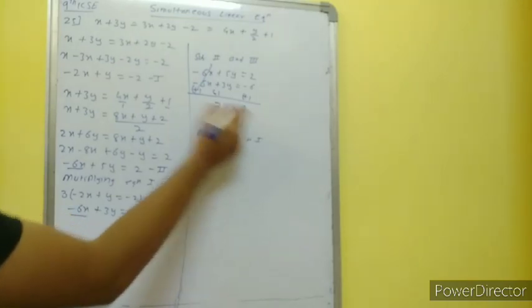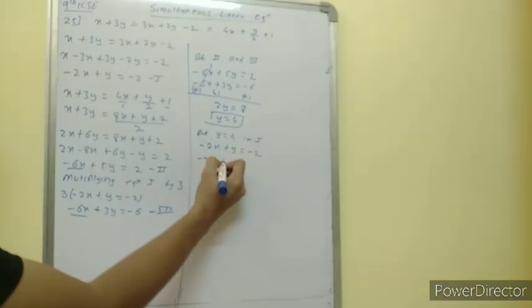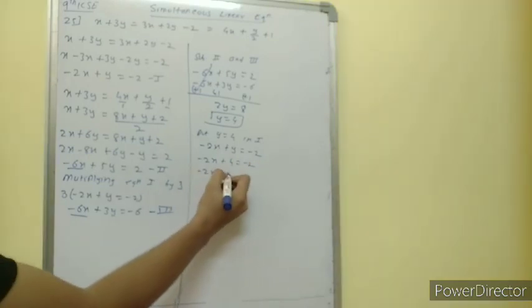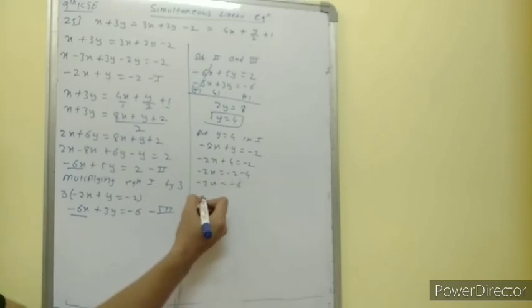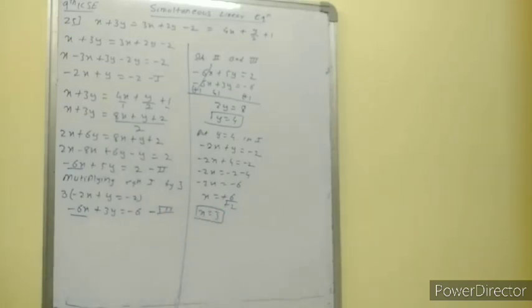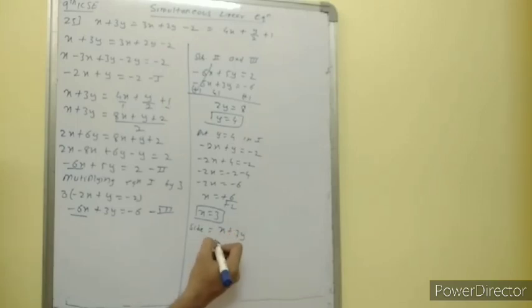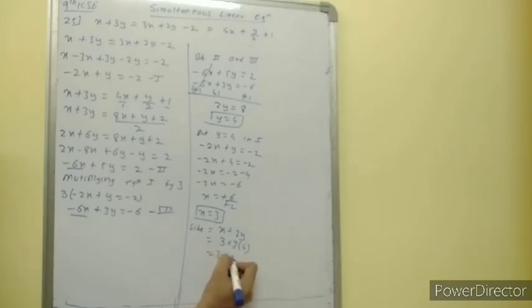Put y equal to 4 in the first equation: minus 2x plus y is equal to minus 2. So minus 2x plus 4 is equal to minus 2; minus 2x is equal to minus 2 minus 4 which is minus 6; x is equal to minus 6 upon minus 2, so x is equal to 3. We have x equal to 3 and y equal to 4. But we are asked to find the side: side equals x plus 3y equals 3 plus 3 into 4 equals 3 plus 12 equals 15. Therefore each side is 15 since it is an equilateral triangle.